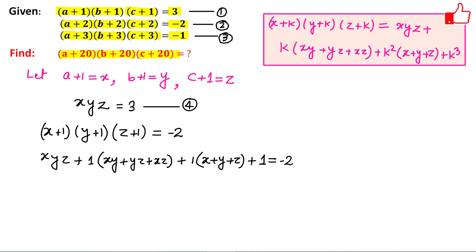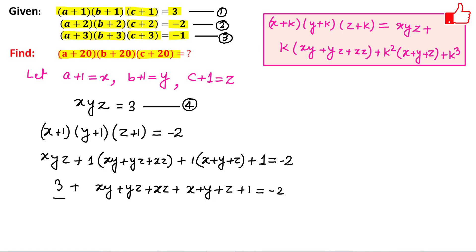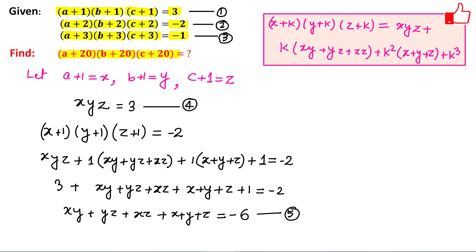Since xyz equals 3 from equation 4, plugging in: 3 + (xy + yz + xz) + (x + y + z) + 1 = -2. Taking constants to the right-hand side gives xy + yz + xz + x + y + z = -6. Let us call this equation 5.